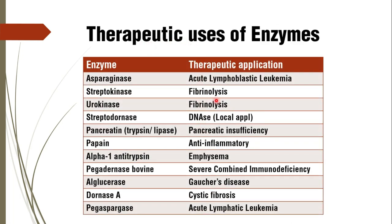Coming to therapeutic uses of enzymes — these are the respective therapeutic applications. For fibrinolysis, these are the clot busters used in myocardial infarction or cerebrovascular episodes where clots clog blood vessels. We use streptokinase, urokinase, and alteplase as enzymes for fibrinolysis. For acute lymphoblastic leukemia we use asparaginase, and for acute lymphatic leukemia we use pegaspargase. These two enzymes are used in these two cancers respectively.